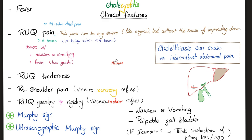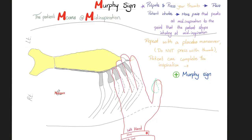We have two types of Murphy sign — not one, two. The first one is clinical, using your hand for physical exam. The second one is ultrasonographic, using the probe of the ultrasound. I can touch your gallbladder with my hand and it's going to hurt, or I can touch it with the ultrasound probe.